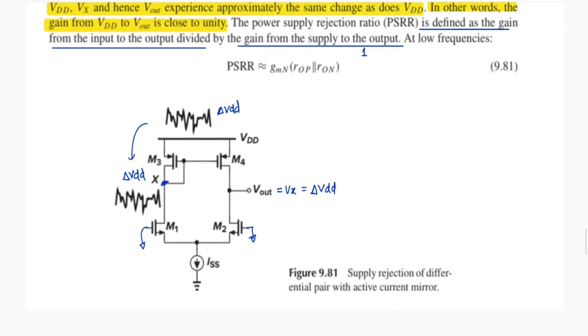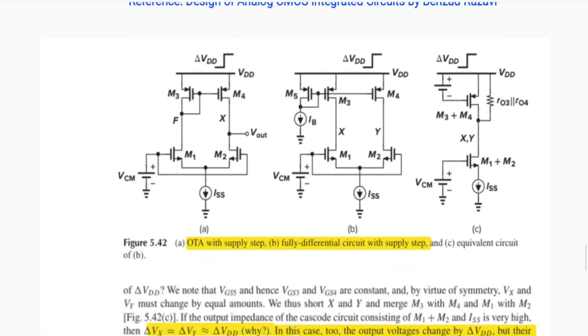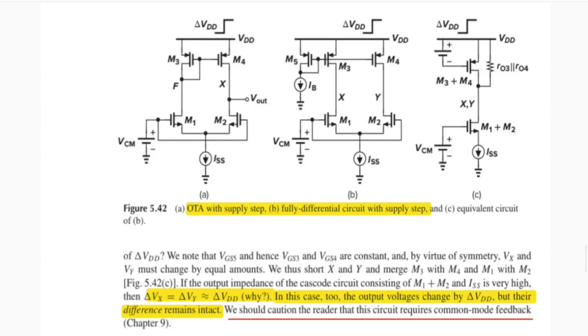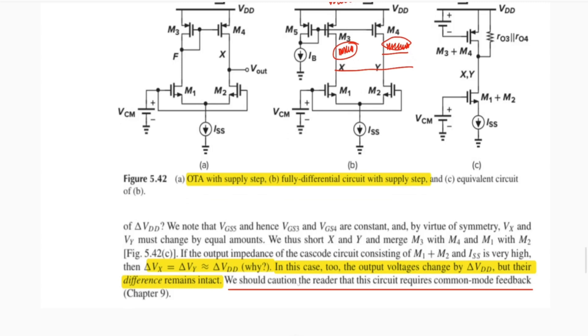So what will be the solution for this problem? For solving this problem we go to this structure. In this structure this variation will transfer to both terminals and when we take differential output, this variation will be cancelled out. So they have written here, in this case too the output voltage changes by delta VD but their difference remains intact.